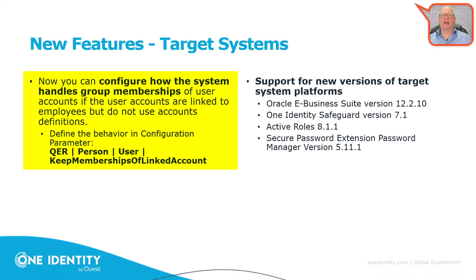Recall that we talked about linked accounts and new features around them in earlier sessions. That was improved again in version 9.1.1. We added a new configuration parameter — QER Person User Keep Membership of Linked Accounts — which handles how group memberships of linked accounts are managed. For example, if an identity to which a linked account is linked gets deactivated, the behavior can be configured exactly there. There is no single standard behavior anymore; there are now multiple configurable standard behaviors.